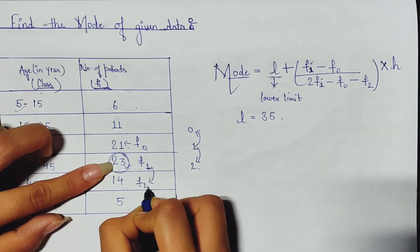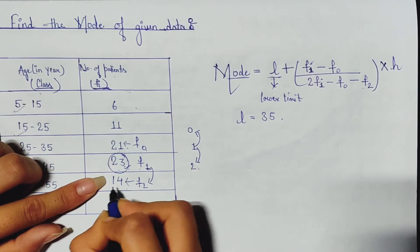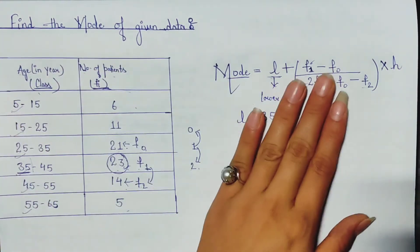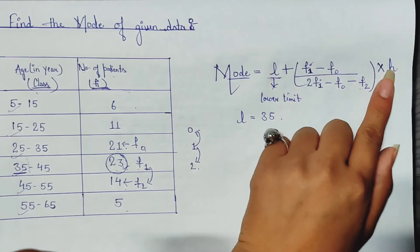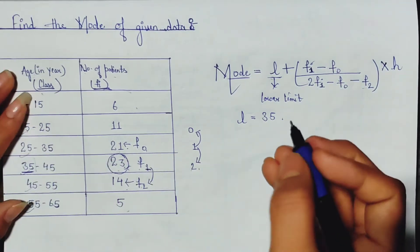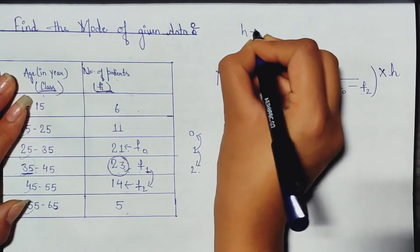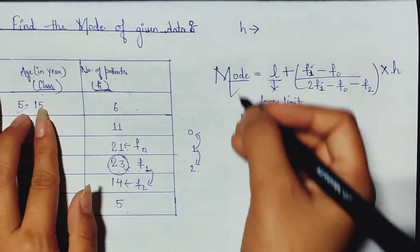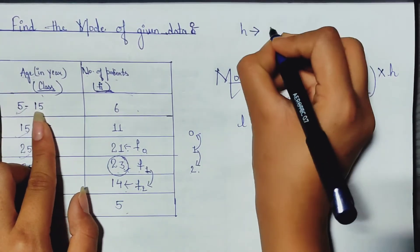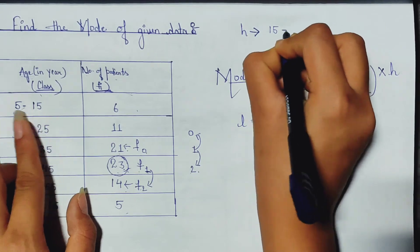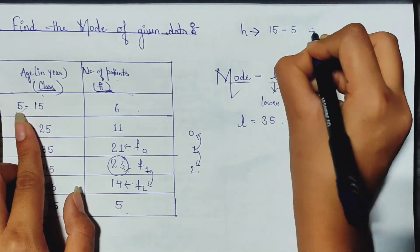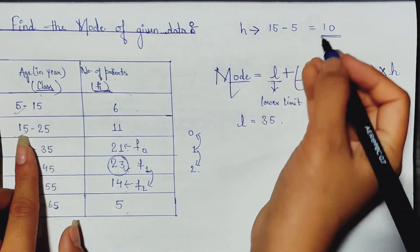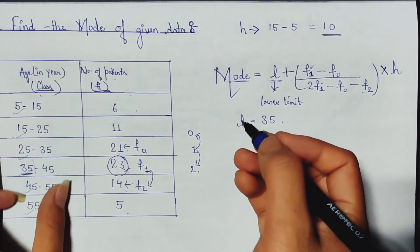Okay, now we just need to put all these values in the formula. Here we are seeing there is one more term, that is h. H is nothing but height, the size of the class. Upper limit minus lower limit, and the value is 10. So height is 10. 25 minus 15 is 10, so the height for this sequence is 10.